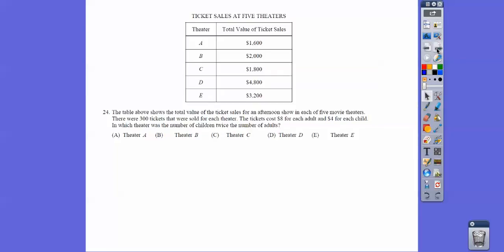All right, almost done with this part. The table above shows the total values of ticket sales for an afternoon show on each of five movie theaters. There were 300 tickets that were sold for each theater. The ticket cost for each adult is $8 and $4 for the kids. In which theater was the number of children twice the number of adults?